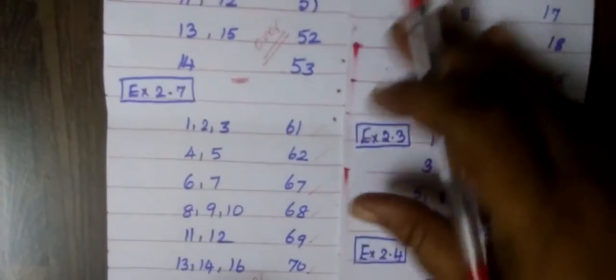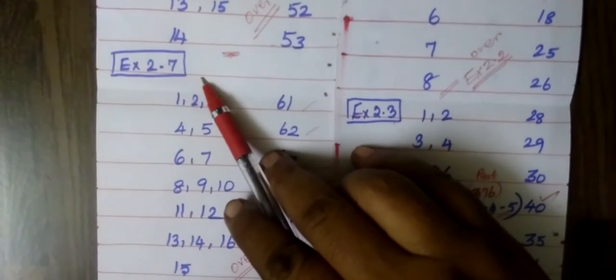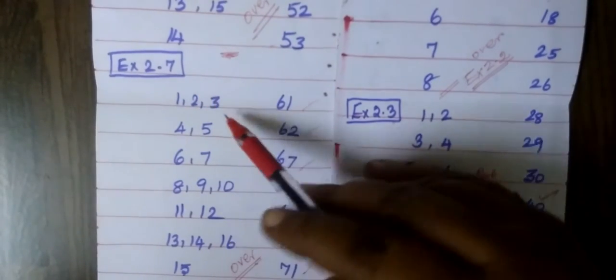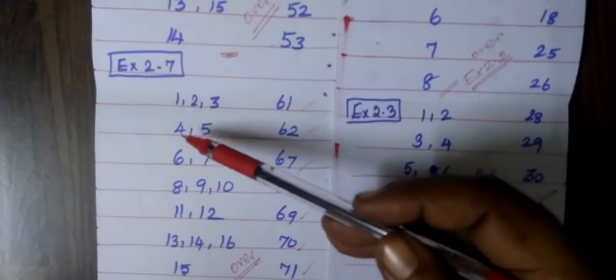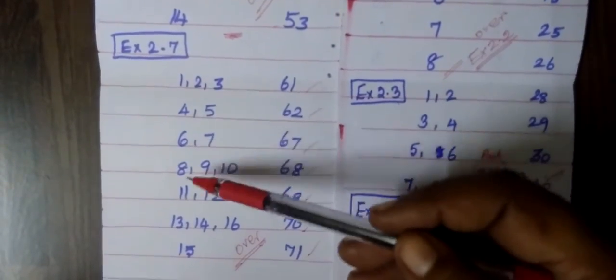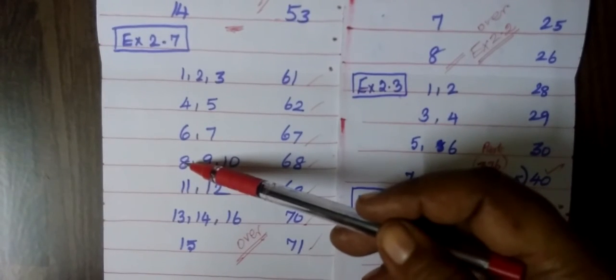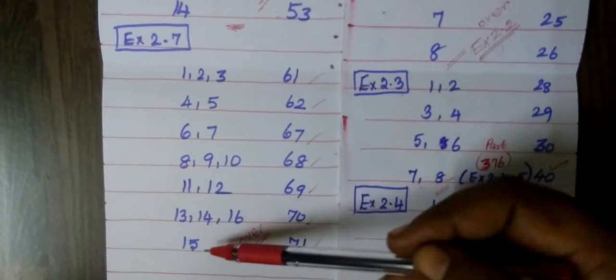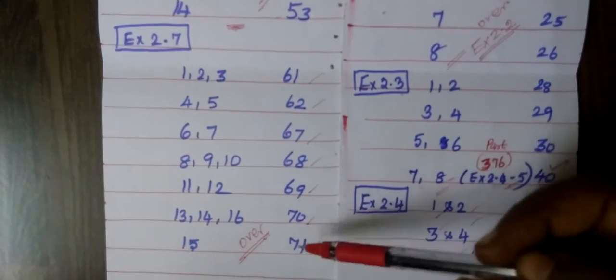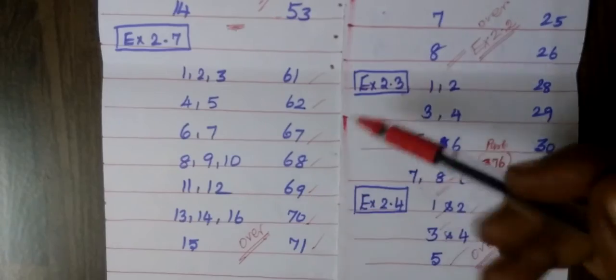So, in this video, we see Exercise 2.7. In Exercise 2.7, question number 1, 2, 3, then 4, 5, 6, 7, 8, then 9, 10, 11, 12, 13, 14, 15, 16. So Exercise 2.7 is over.